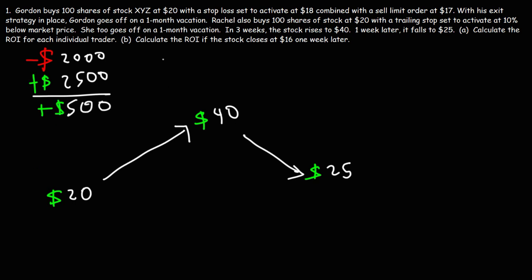Now to calculate his ROI, it's going to be the profit that he generated, which is $500, divided by the cost of investment, which was $2,000, times 100%. If he canceled the two zeros, that's 5 over 20, which is a quarter or 0.25. So he's looking at a return of 25%.